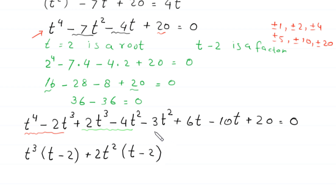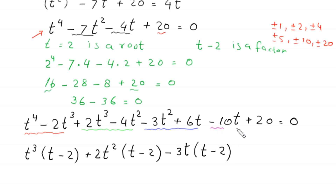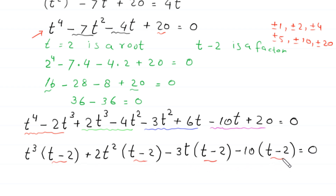From the terms negative 3t squared plus 6t, we factor out negative 3t, leaving t minus 2. From the terms negative 10t plus 20, we factor out negative 10, leaving t minus 2, equals 0. The expression t minus 2 is a common factor, so we factor it out, leaving t minus 2 times t cubed plus 2t squared minus 3t minus 10, equals 0.